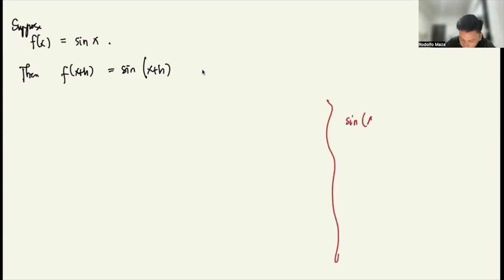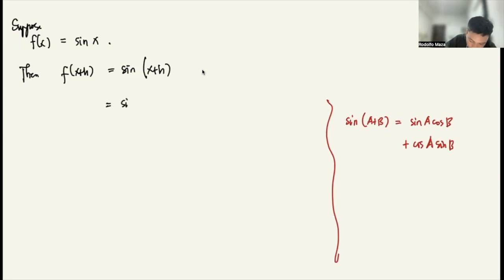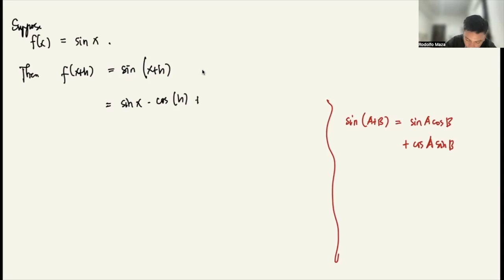Sine of (a + b) is the same as sine of a cosine of b plus cosine of a sine of b. So sine of (x + h) becomes sine x times cosine h plus cosine x times sine h.